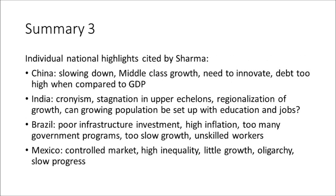Sharma breaks his book down into individual nations, with each nation given a chapter, and some nations grouped together by regions. He starts with China, saying it is slowing down with middle class growth challenges, a need to innovate, and debt too high compared to GDP. India's problems include cronyism, stagnation in upper echelons, regionalization of growth, and the question of whether a growing population can be set up with education and jobs.